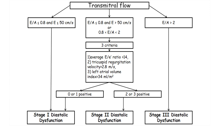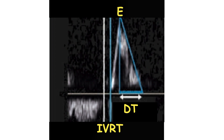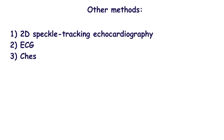Isovolumetric relaxation time also plays an important role. It is the time between the closure of the aortic valve and the opening of the mitral valve; normally it is less than 70 milliseconds. Deceleration time is also important — it is the time from the E peak to baseline, and normally it is less than 220 milliseconds. In patients with preserved ejection fraction, 2D speckle tracking echocardiography often detects impaired global longitudinal systolic strain.